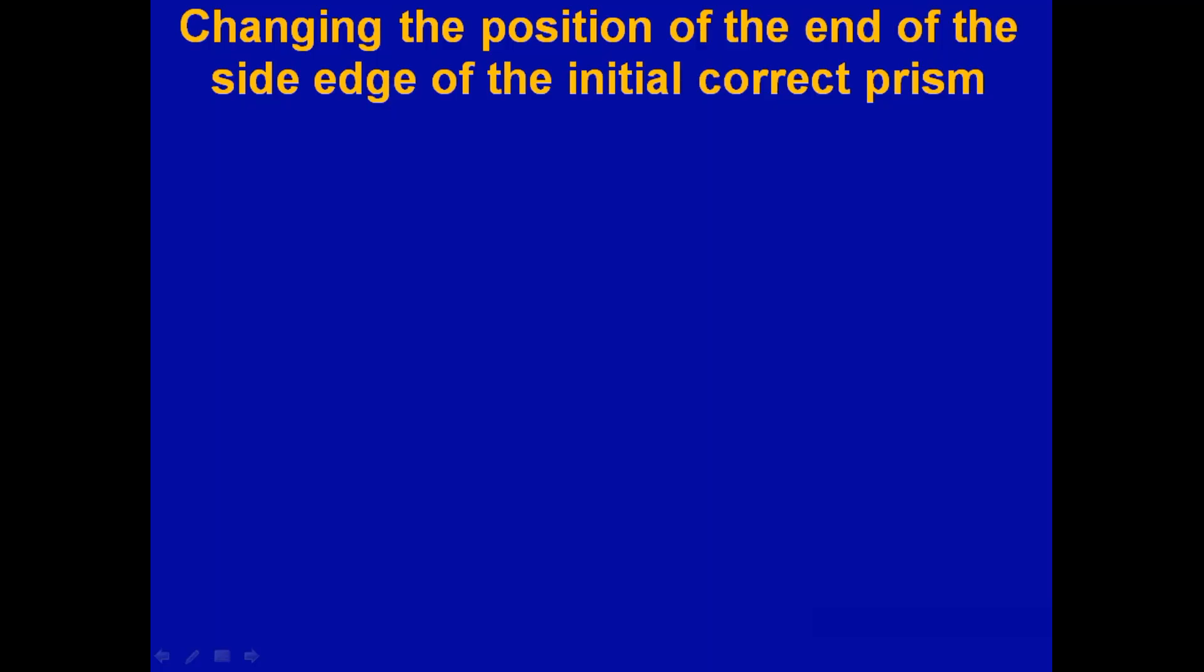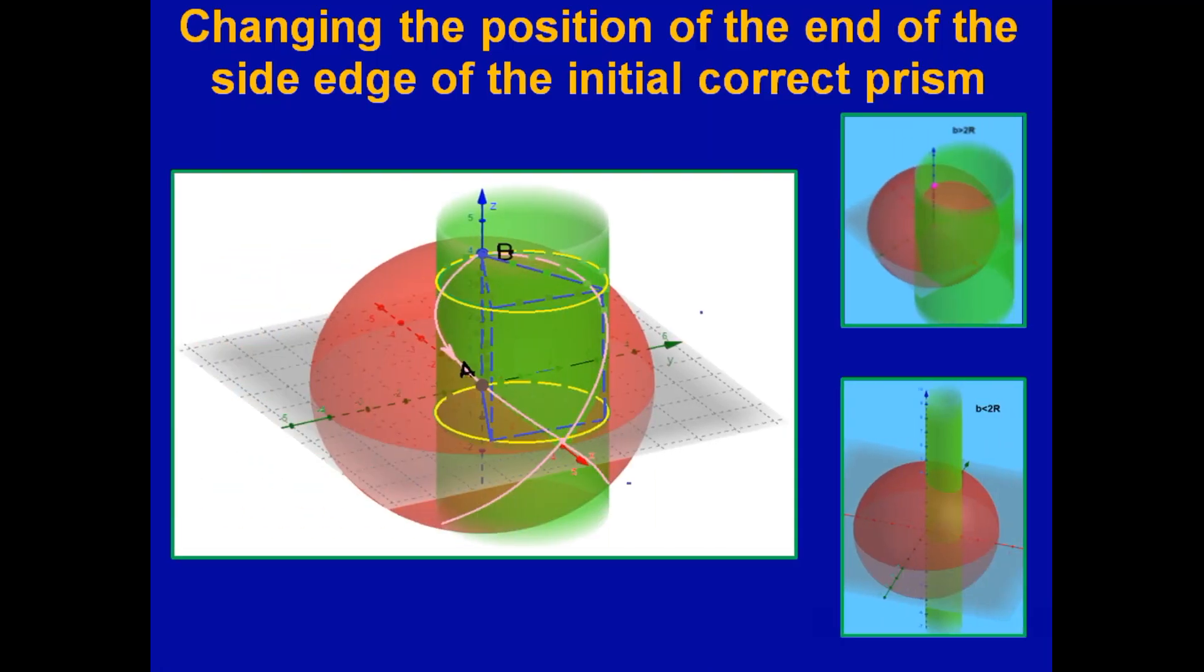During the work, we investigated changing the position of the end of the side edge of the initial correct prism. So, for the right prism, if the length of the lateral edge b is fixed and the length of the lateral edge is equal to the diameter of the circle described around the base, when the upper base is turned, the end of the lateral edge is displaced along the Viviani curve.